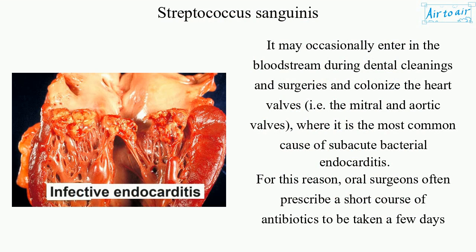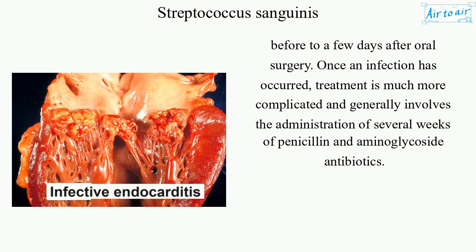Streptococcus sanguinis may occasionally enter the bloodstream during dental cleanings and surgeries and colonize the heart valves — i.e. the mitral and aortic valves — where it is the most common cause of subacute bacterial endocarditis. For this reason, oral surgeons often prescribe a short course of antibiotics to be taken a few days before to a few days after oral surgery. Once an infection has occurred, treatment is much more complicated and generally involves the administration of several weeks of penicillin and aminoglycoside antibiotics.